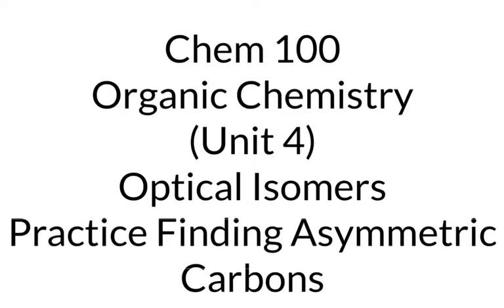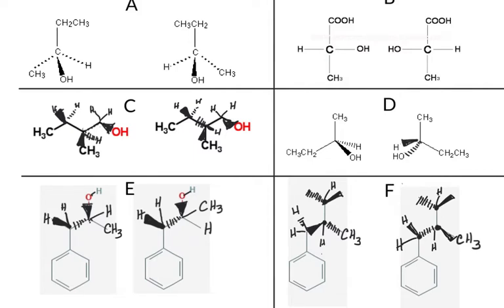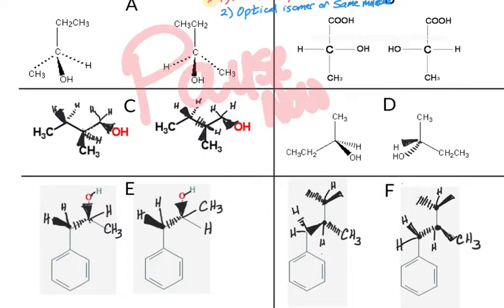Now that you've heard about optical isomers and asymmetric carbons, we're going to have you practice finding the asymmetric carbons. For each of these sets of molecules, I want you to do two things: first, find the asymmetric carbon and highlight it, and second, decide whether this set is an optical isomer or the same molecule. Please pause the video while you find those asymmetric carbons, then restart and I'll go through them with you.